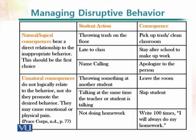Some unnatural consequences do not logically relate to the behavior nor promote the desired behavior, and they may cause emotional or physical pain to the students. For example, throwing something at another student and the teacher asking them to leave the classroom, or slapping a student, could be inappropriate in many situations. Not doing homework and asking students to write 100 times 'I will always do my homework' is another example. Natural consequences are usually preferred over unnatural ones, and the teacher may have to decide which to apply.